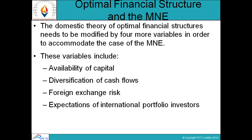For optimal financial structure and the MNE, the domestic theory of optimal financial structure needs to be modified by four more variables in order to accommodate the case of the MNE. These variables include: availability of capital, diversification of cash flows, foreign exchange risk, and expectations of international portfolio investors.